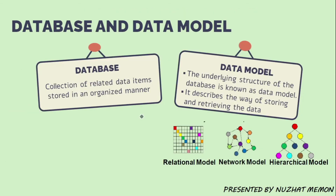Database is a collection of related data items stored in an organized manner. A data model describes the underlying structure of a database — it describes the way of storing and retrieving data, so a data model is essentially a structure to store a database. There are three models: the relational model, the network model, and the hierarchical model. We will focus on the relational model, where 'relation' means table. The network and hierarchical models are not included in the syllabus.